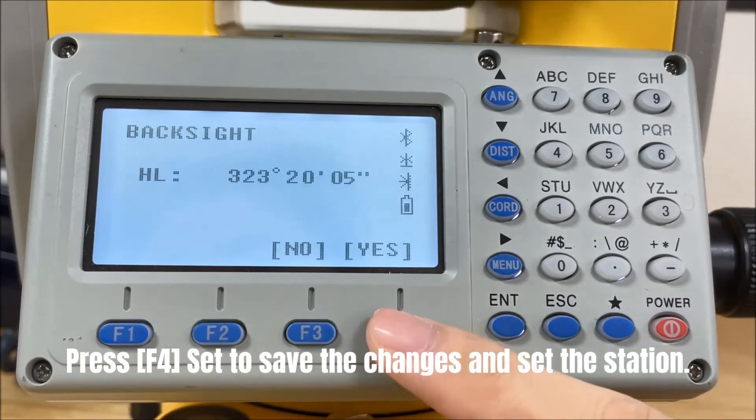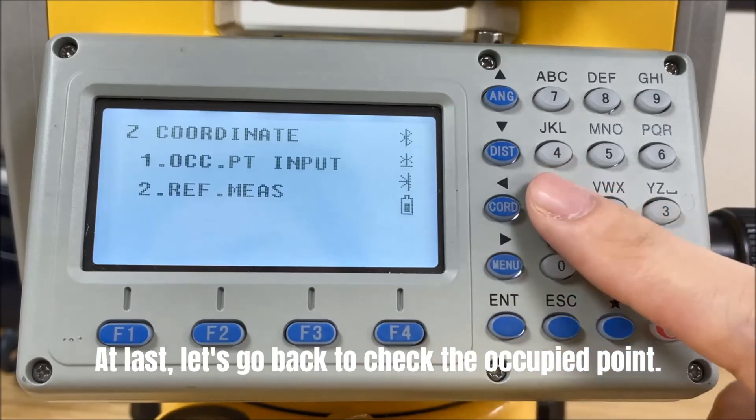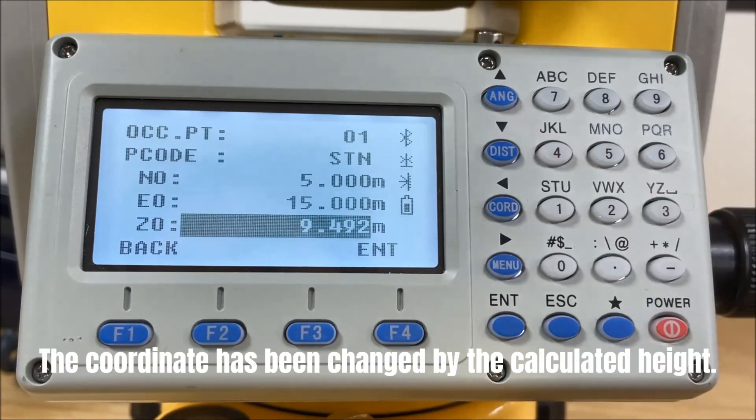Press Set to save the changes and set the station. At last, let's go back to check the occupied point. The coordinate has been changed by the calculated height.